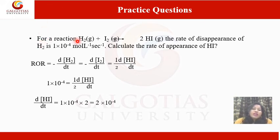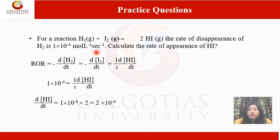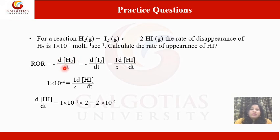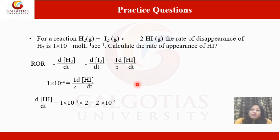Another question: for the reaction H₂ + I₂ → 2HI, the rate of disappearance of H₂ is 1 × 10⁻⁴ mol·L⁻¹·s⁻¹. Calculate the rate of appearance of HI. According to the formula, ROR = −d[H₂]/dt = −d[I₂]/dt = (1/2)d[HI]/dt. We put the value of d[H₂]/dt = 1 × 10⁻⁴ to find the rate of appearance of HI.